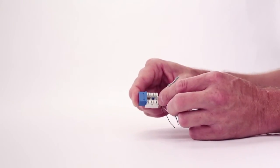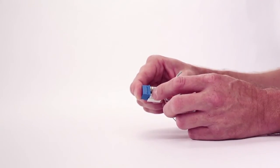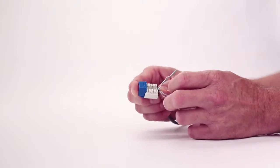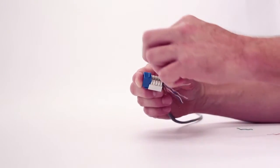So 568A, the green pair will go where the orange pair went for B, the orange pair will go where the green pair went. So I'll start with the greens.